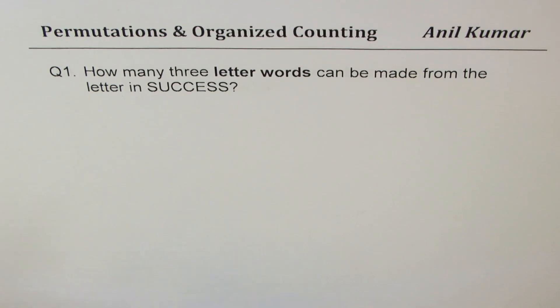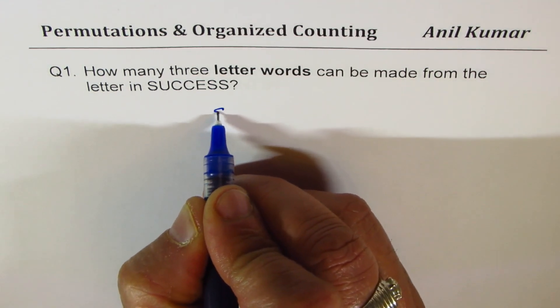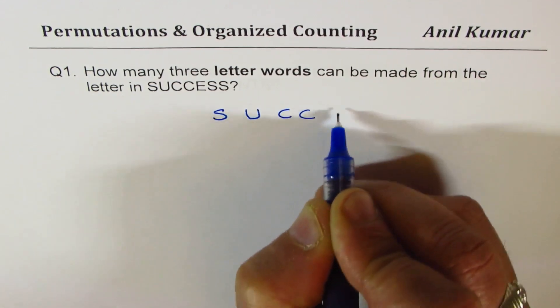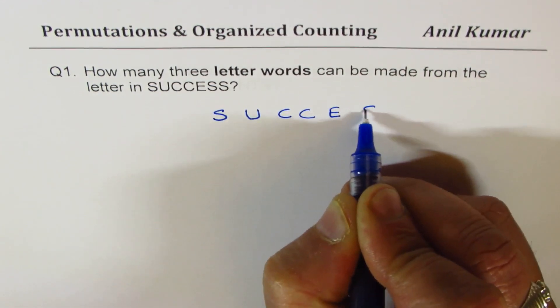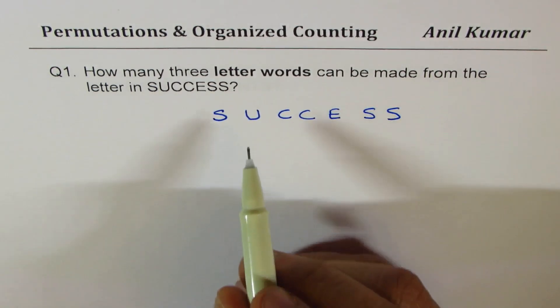How many three-letter words can be made from the letters in SUCCESS? Let's try to understand the word itself. We have letters as C, U, C, C, E, S, S. In all, how many letters do we have?